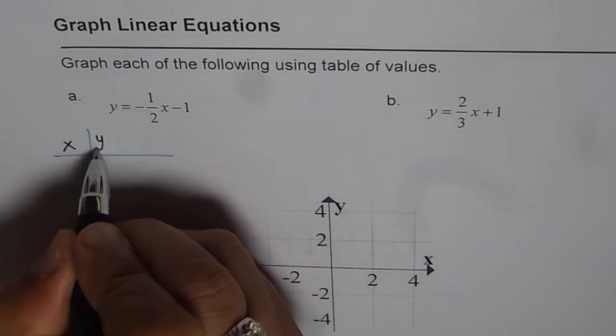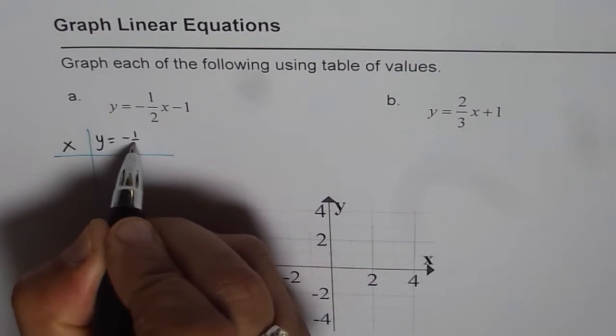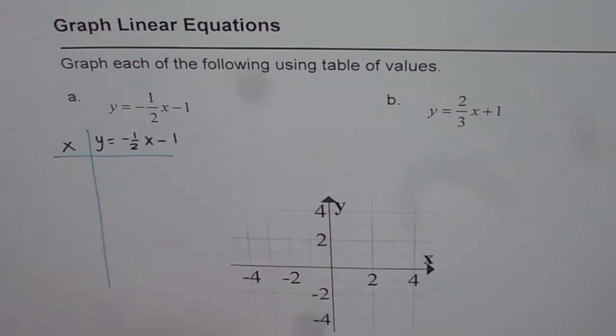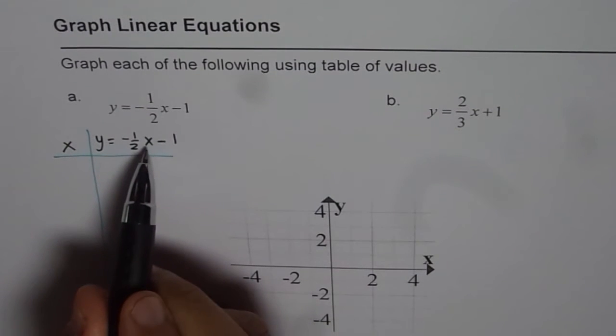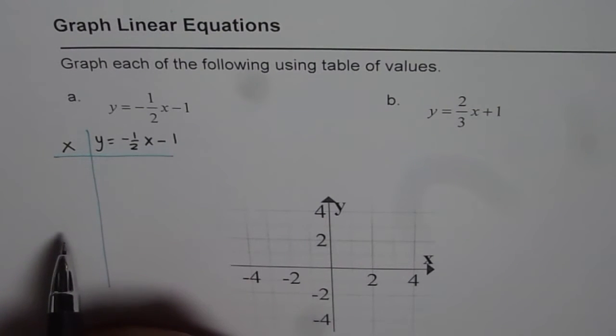Our equation is y equals to minus half x minus 1. Now, in this case, the best value of x is 0. So, let's use 0 as x.